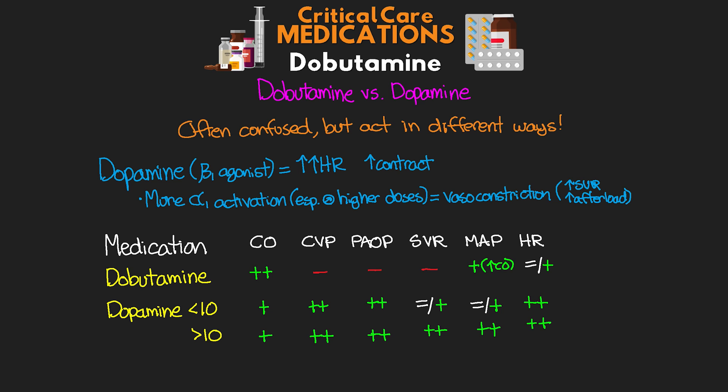Seeing these two side-by-side really shows you some of the big differences. For dobutamine, the main benefit is the increase in cardiac output and support for the patient's blood pressure by increasing that cardiac output. Whereas with dopamine, we're really looking at the increased heart rate, and then at those higher doses, the increase in SVR and MAP as well.